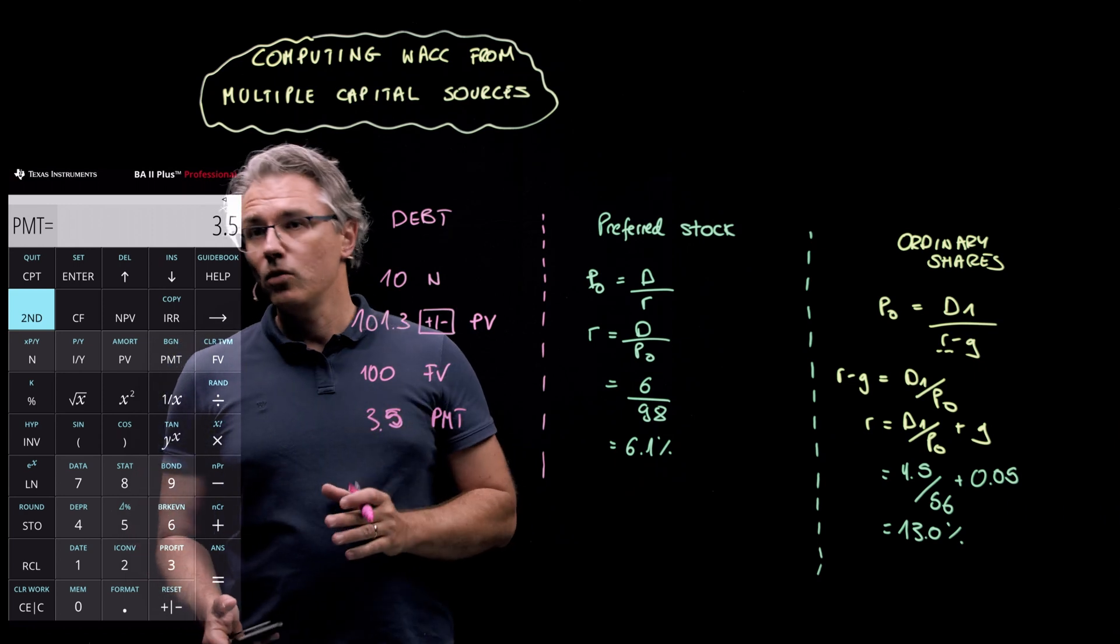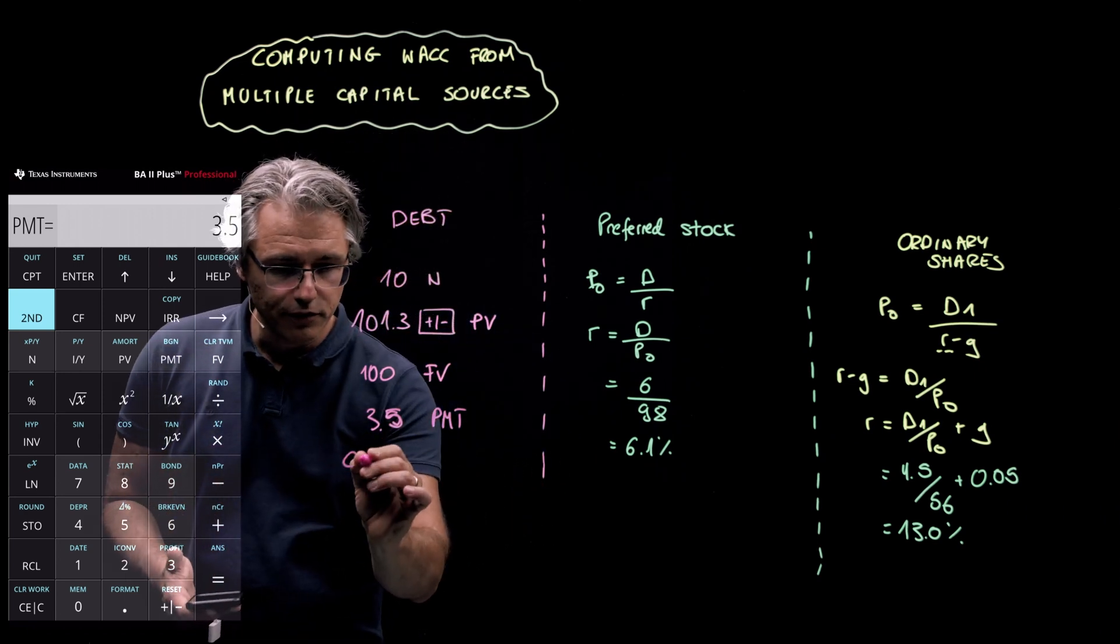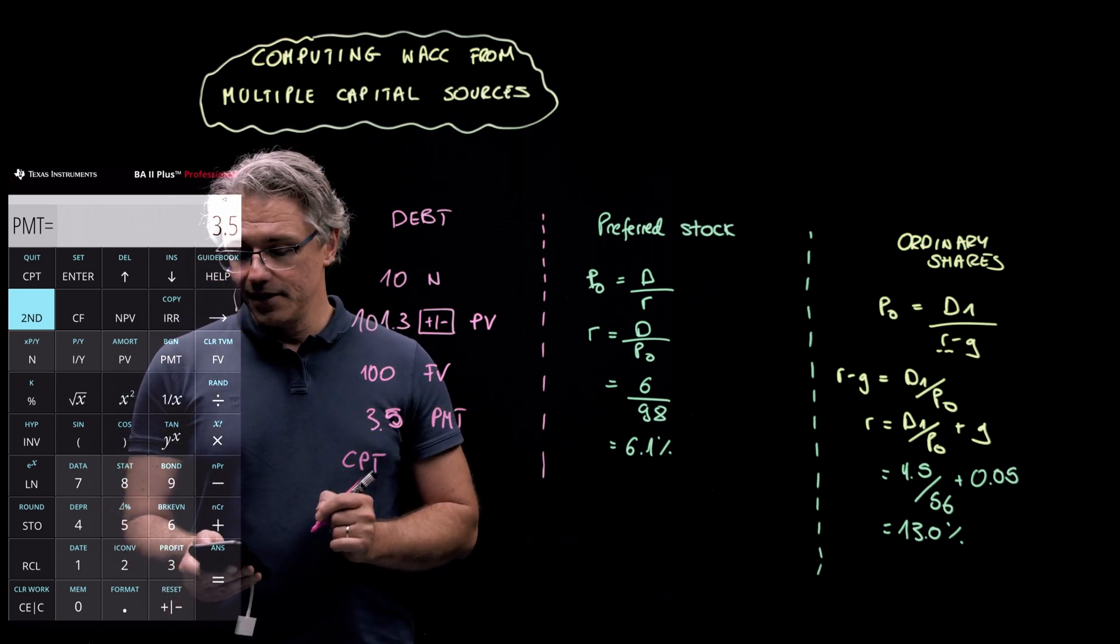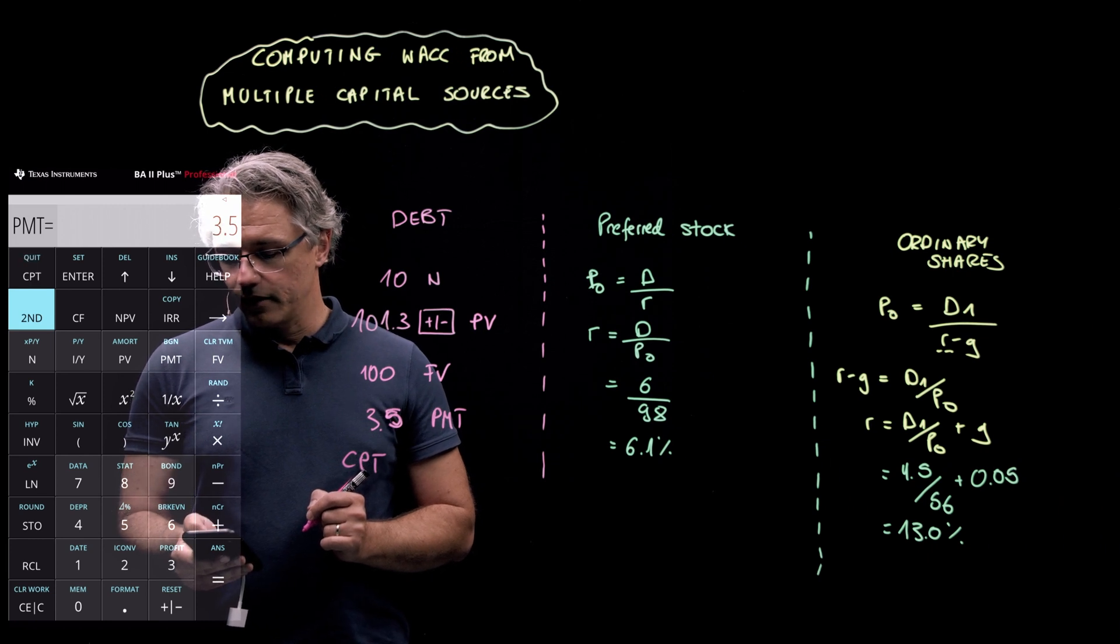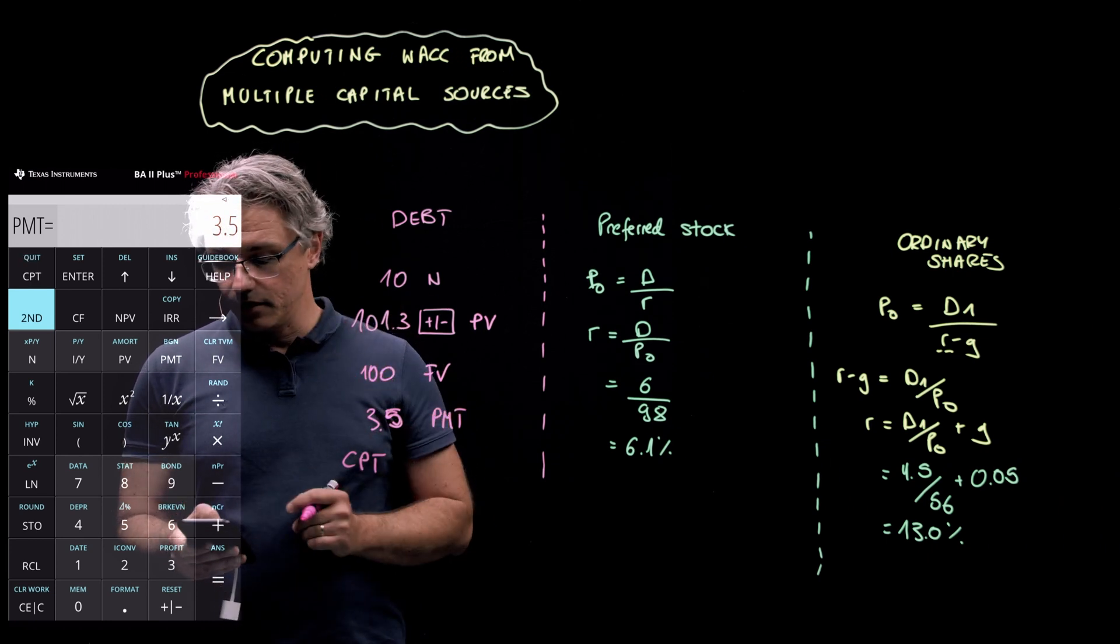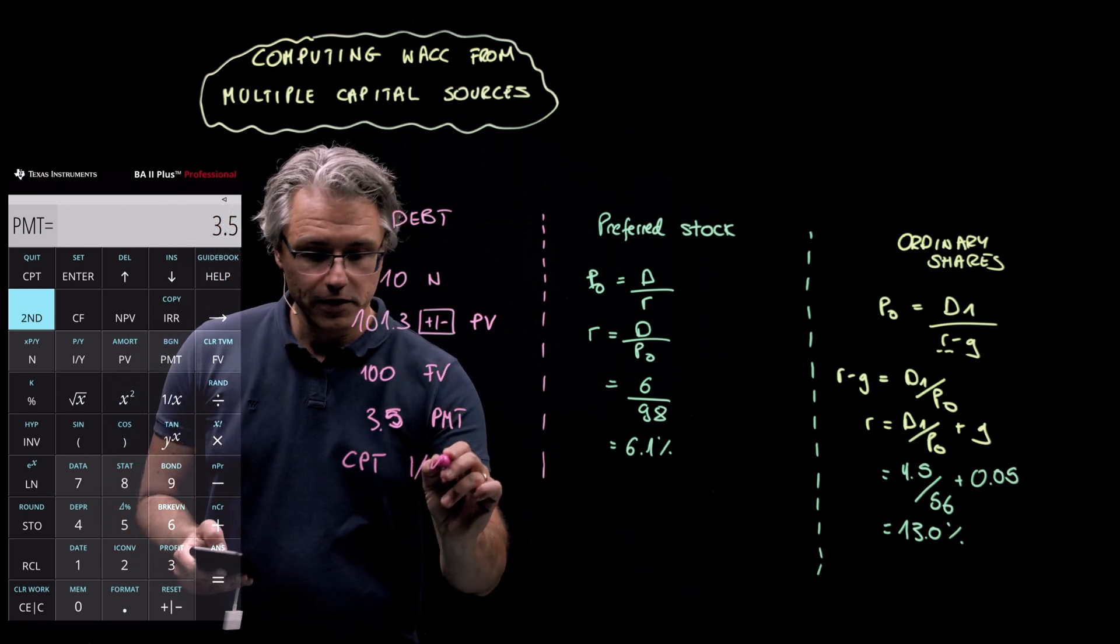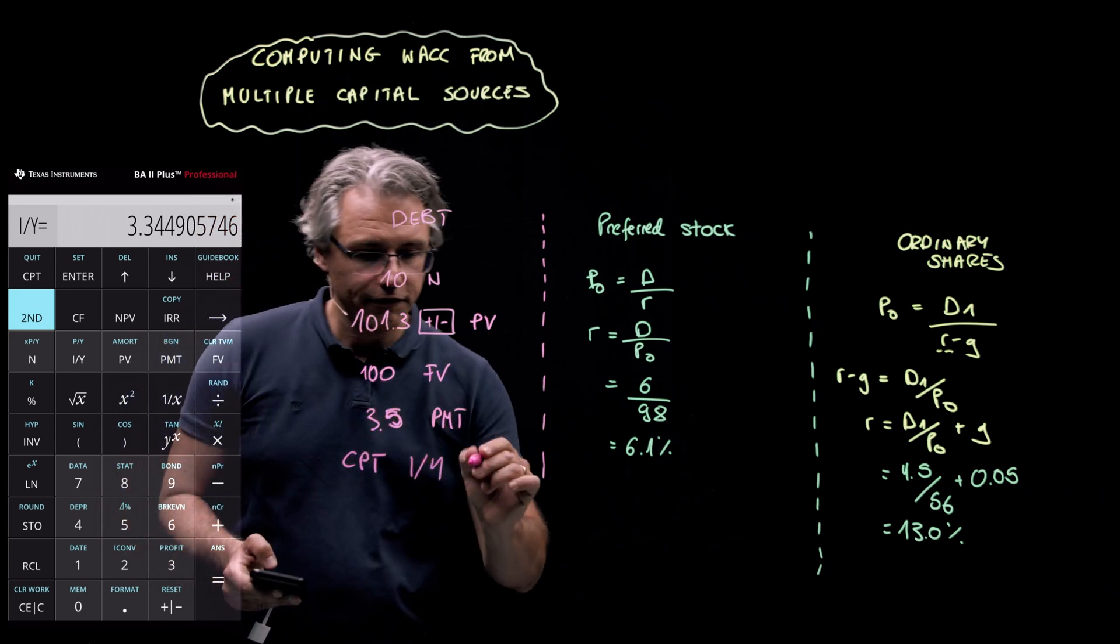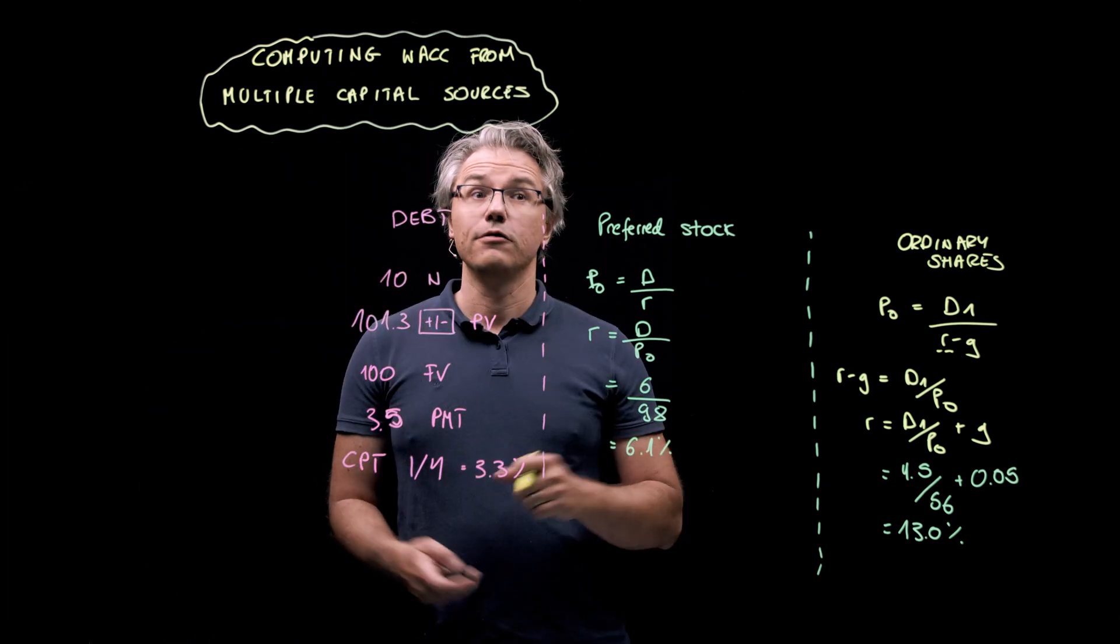Now, we've made all the inputs that we could. Let's now get the calculator to compute the yield to maturity. And we do this by pressing the CPT key, which is sitting at the very top of your calculator keys on the left-hand side, followed by I over Y, which stands for yield. And you can see that this comes in at roughly 3.3%.